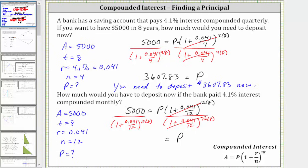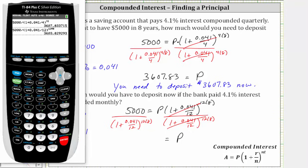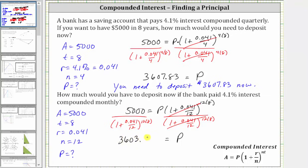Going back to the calculator, we enter the quotient: 5,000 divided by the quantity one plus 0.041 divided by 12, close parenthesis, raised to the power of 12 times eight. If you have an older TI-84 or 83, you would have to put 12 times eight in parentheses to make sure the product is in the position of the exponent. The principal starting amount to the nearest cent is $3,603.83. Note that this time we had to round up. To answer the second question, you would need to deposit $3,603.83 now to have $5,000 in eight years if the account pays 4.1% interest compounded monthly.